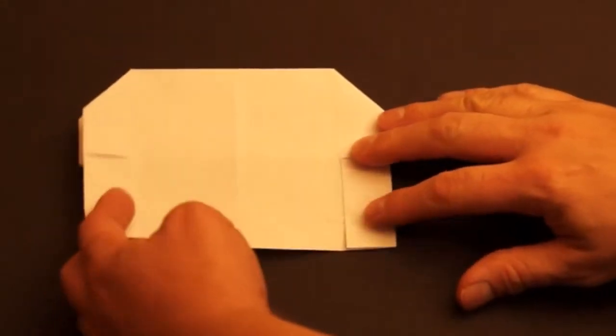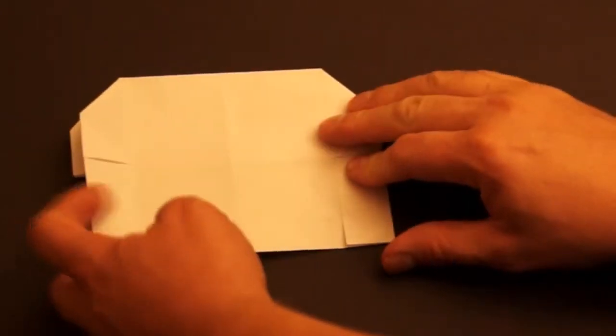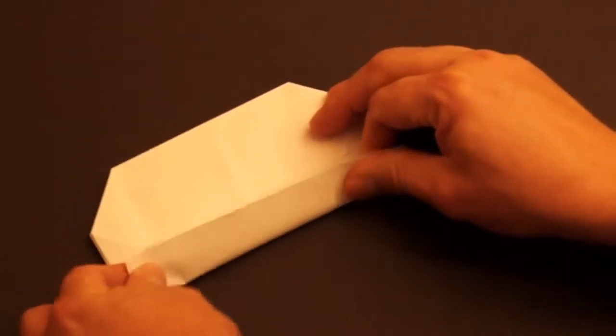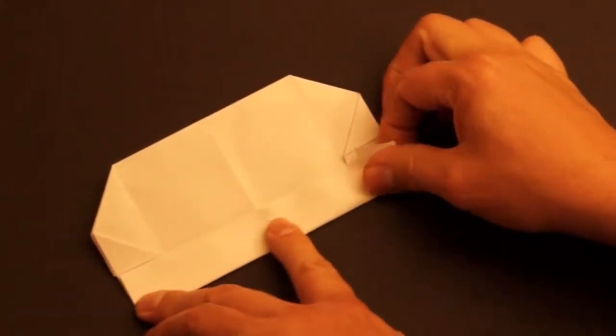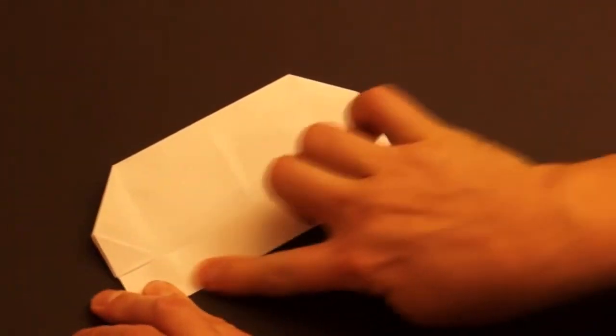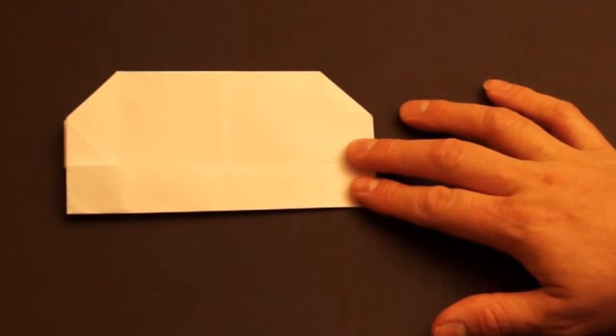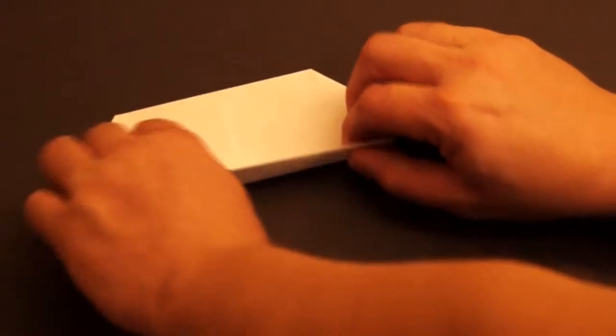Then turn it over and do the same thing on the back. Fold the bottom edge so that it lines up right under these two triangles. Then fold it up one more time.